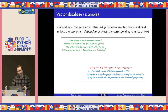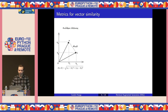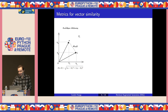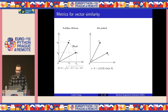Depending on which embedding model we're using, the vectors could have hundreds or even thousands of dimensions, so it's not possible to identify the nearest neighbor by direct visualization. Instead, we have to use a metric that can measure distance between vectors in a high-dimensional space, and there are several options for doing this. For example, one metric that can be used to measure vector similarity is the Euclidean distance, which is given by the straight-line distance between vectors A and B.